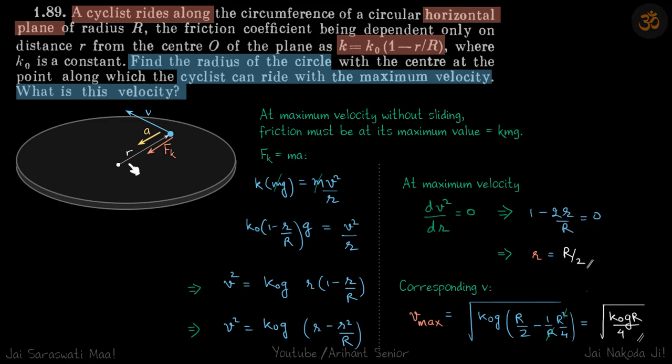Let's assume the velocity is v at a distance r. Because it's going in circular rounds, its acceleration will be towards the center, and the only external force on the cyclist is friction, so the force causing this acceleration is also the frictional force.